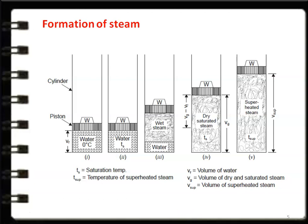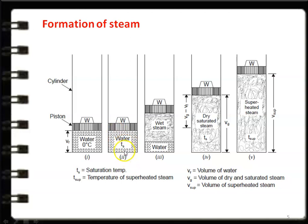Now look at the diagram. We have a piston-cylinder arrangement. Initially, we have water at 0°C. The piston reciprocates freely in the cylinder; a weight maintains the piston position and heat is supplied. The pressure is maintained at atmospheric condition throughout all the cylinders, and heat is continuously added. When heat is added, the water temperature increases until it reaches the saturation temperature Ts. When the water reaches the saturation condition and further heat is added, the water starts to evaporate and is converted into water vapour or steam.